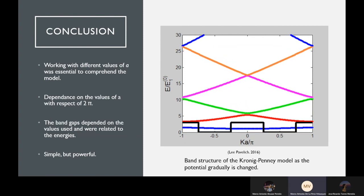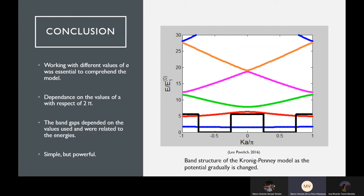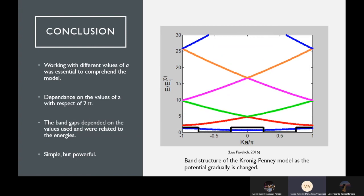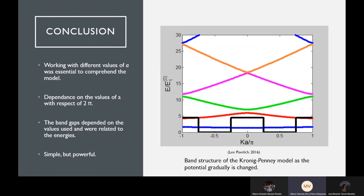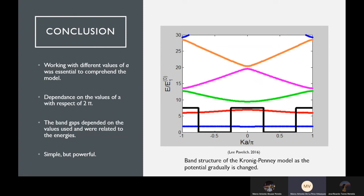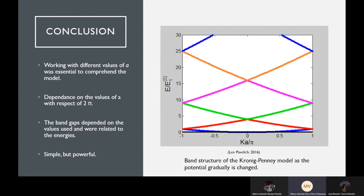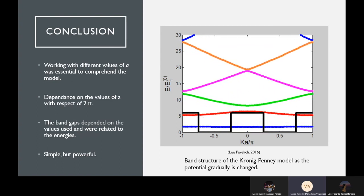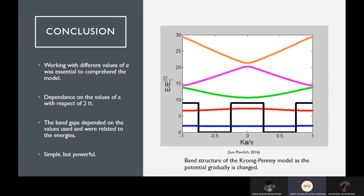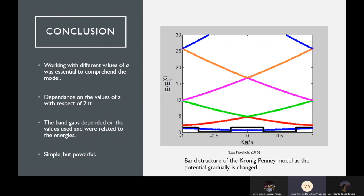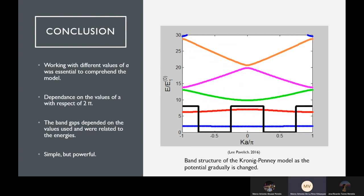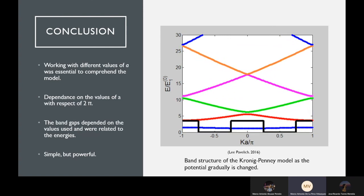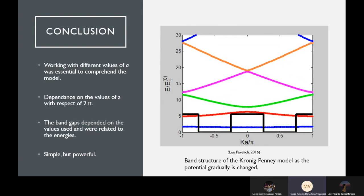We can conclude that working with different values of a was essential to comprehend the model because it is not as easy to visualize this function. We saw that if we change the value further from 2 and pi and they are more curved, then we also can conclude that the band gaps depend on the values used, because when we use one, the band gaps were about two, and with two pi the values were much smaller. We can also conclude that the program that we use is very simple but very powerful due to the fact that it could solve the Kronig-Penney model.